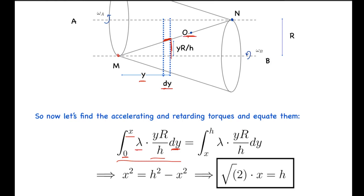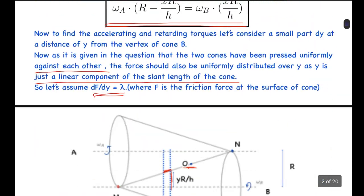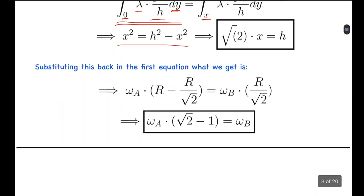In steady state the accelerating and decelerating torques are equal, which gives x² = h² − x², so root 2 times x equals h. Substituting this into the first equation: omega_a times (r minus r/√2) equals omega_b times r/√2. Simplifying, omega_a times (√2 minus 1) equals omega_b. So the final answer is omega_b = (√2 − 1) times omega_a.